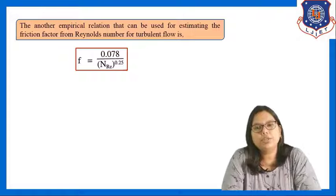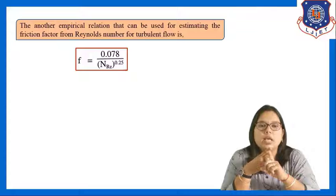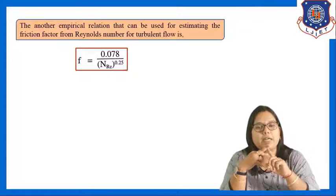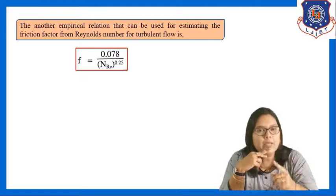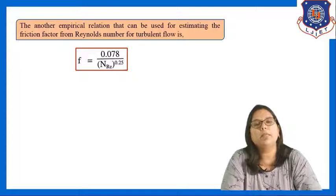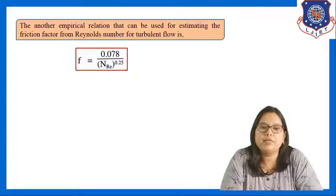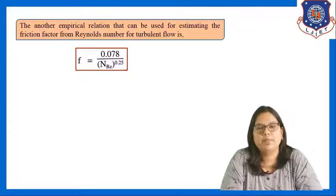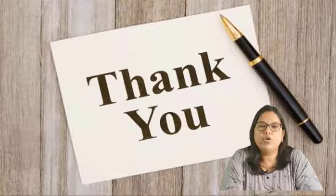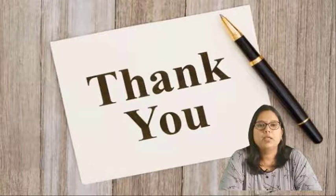In today's session we covered three topics: first, the Hagen-Poiseuille equation; second, the relation between friction factor and Reynolds number for laminar flow; and third, the relation between friction factor and Reynolds number for turbulent flow, for which we saw two empirical equations. That's all for today's session.